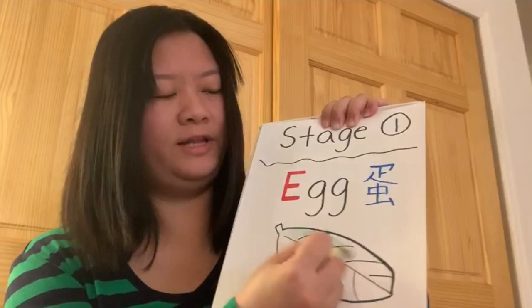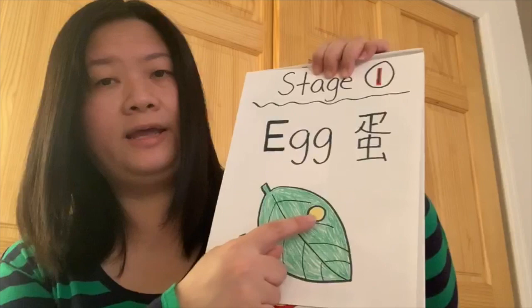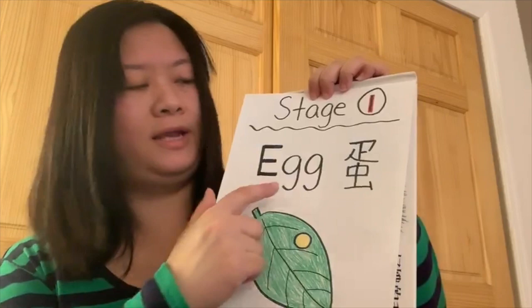So, actually, when you finish, it will look like that. So we have the leaf and the egg on the leaf. This is the first stage one — egg. 蛋。